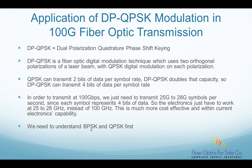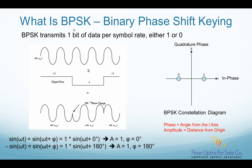Before we explain DP-QPSK in more detail, we have to understand BPSK and QPSK first. BPSK stands for Binary Phase Shift Keying. BPSK changes the phase of a sine wave to represent one bit of data, so it transmits only one bit of data per symbol rate — either 1 or 0. This picture shows how BPSK works.